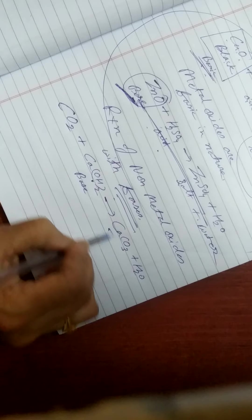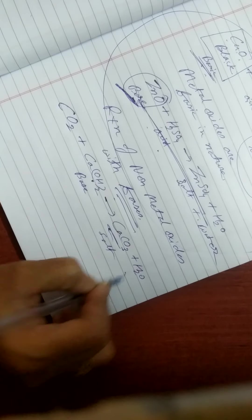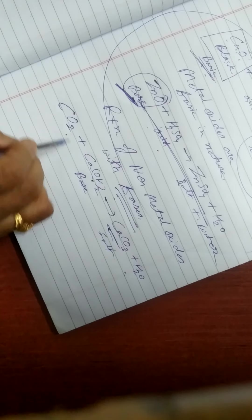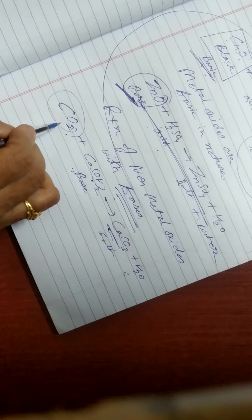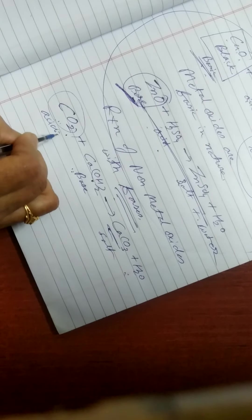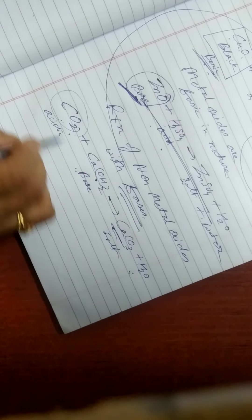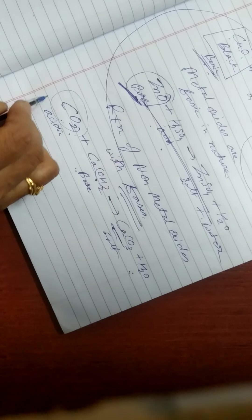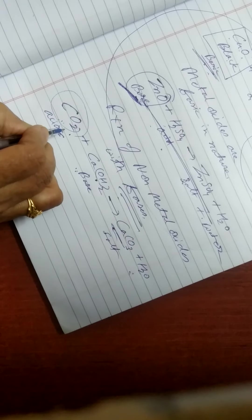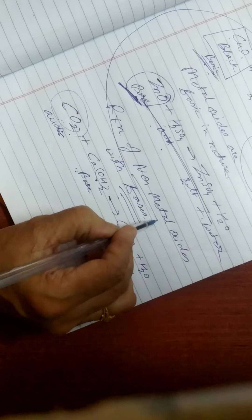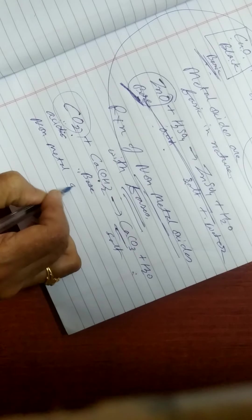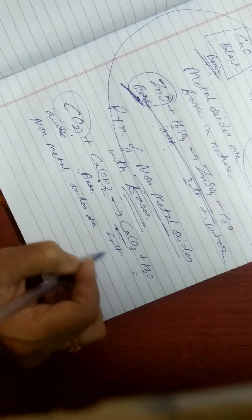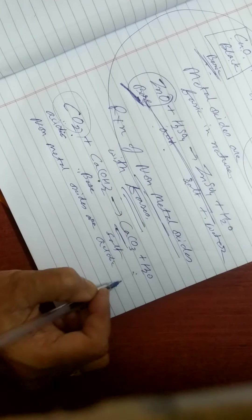They form CaCO3, calcium carbonate, plus H2O. You are all familiar with this reaction. This is salt and water. So any substance when it reacts with base and forms salt plus water, it shows their acidic nature. So non-metal oxides are acidic in nature.